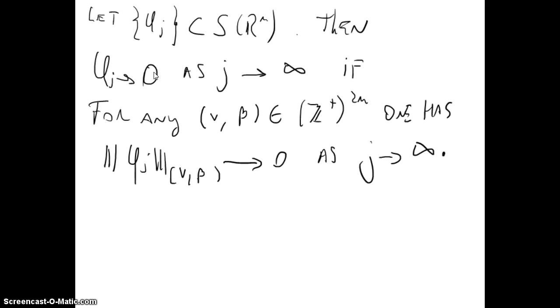So when we have a sequence of functions φ_j that goes to 0 when j goes to infinity, it will be when for any ν, β one has that the norm ||φ_j||_{ν,β} goes to 0 as j goes to infinity.